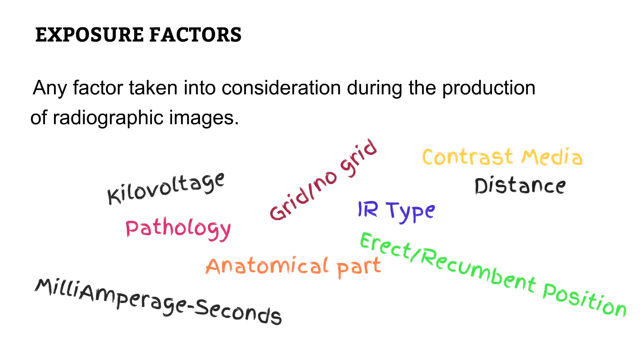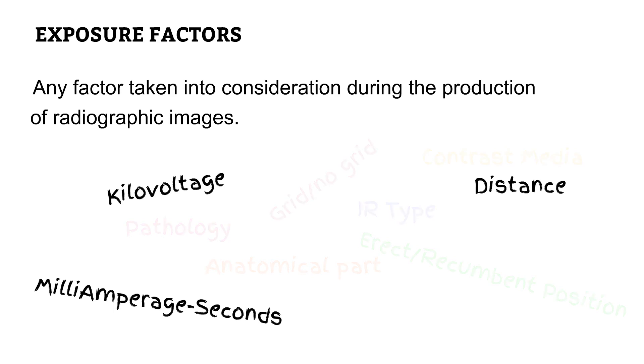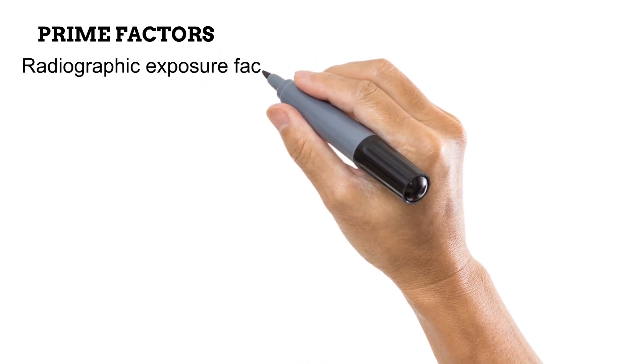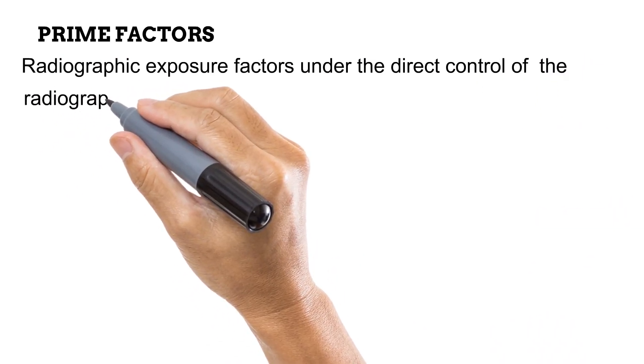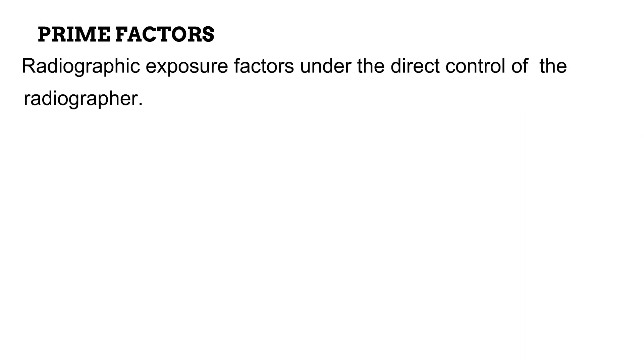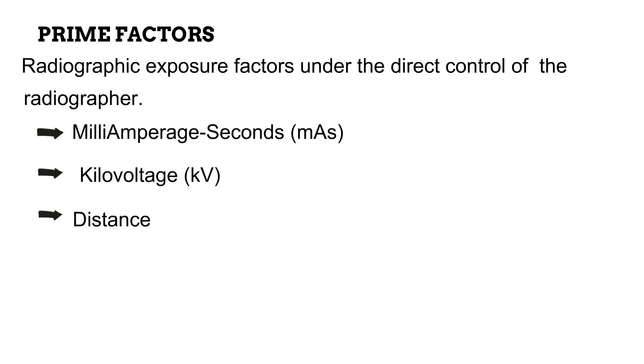Now, there are many exposure factors: pathology, distance, contrast media, and so on. However, there are three in particular that are under the direct control of the radiographer. These are known as the prime factors. To re-emphasize, the prime factors are radiographic exposure factors that are under the direct control of the radiographer. The three prime factors in radiography are the milliamperage seconds or mAs, the kilovoltage KV, and the distance. Let us discuss these in a bit more detail.